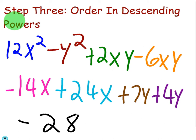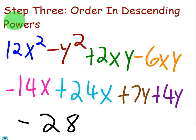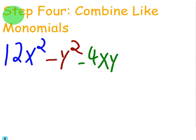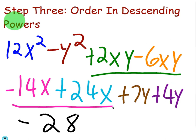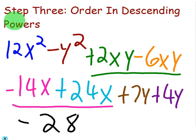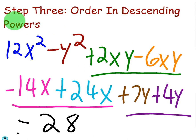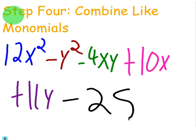So next step, we are going to combine the like terms. Now, any term that doesn't combine, I just have to rewrite it. So 12x squared minus y squared. Those do not have any terms to combine. But I am going to combine these two terms because they are both xy. So that will become minus 4xy. Also, these two terms are going to combine because they are both x, and they are going to form plus 10x. Also, these two terms will combine. They are both y. They will form plus 11y. That is right. Then the minus 28 doesn't combine with anything. So I am just going to drop it down. And that is going to be the final answer.